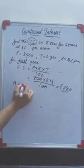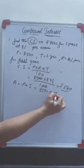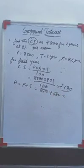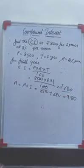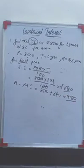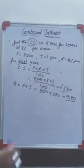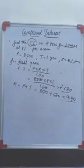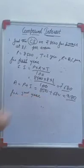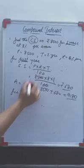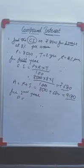Amount will be principal plus interest, it will be 8500 plus 680, and what will it be? The total sum will be 9180. Now, this is the amount accumulated after 1 year. But you need to calculate the compound interest for 2 years. This is up to 1 year. For the second year, your new principal is 9180, because we are going for compound interest, not simple interest.